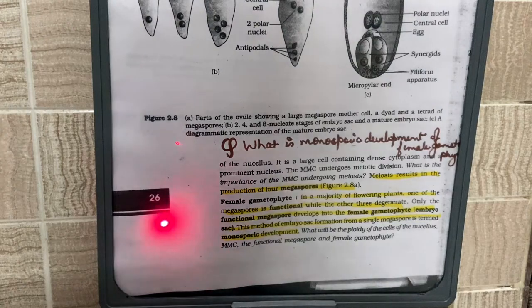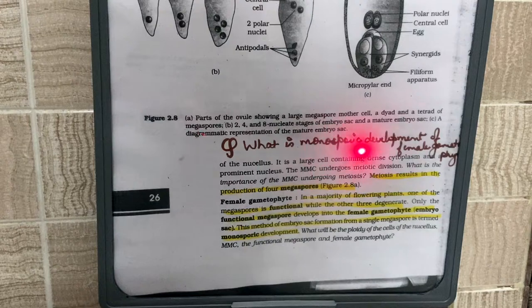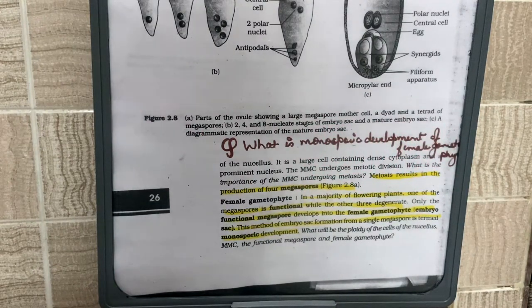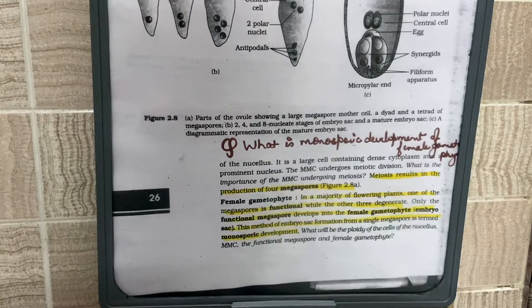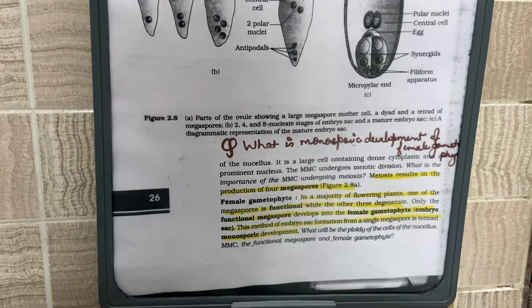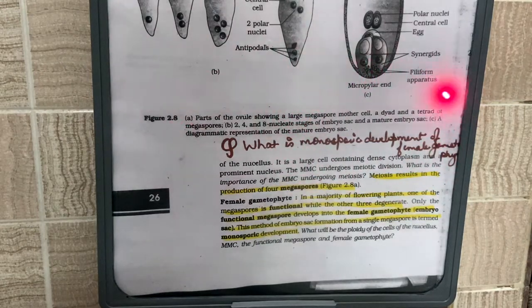Moving on to page 26, a very important question is: what is monosporic development of the female gametophyte? The female gametophyte, that is the embryo sac, develops from only one megaspore because out of the four megaspores formed, three degenerate. Since it develops from only one megaspore, this is known as monosporic development.